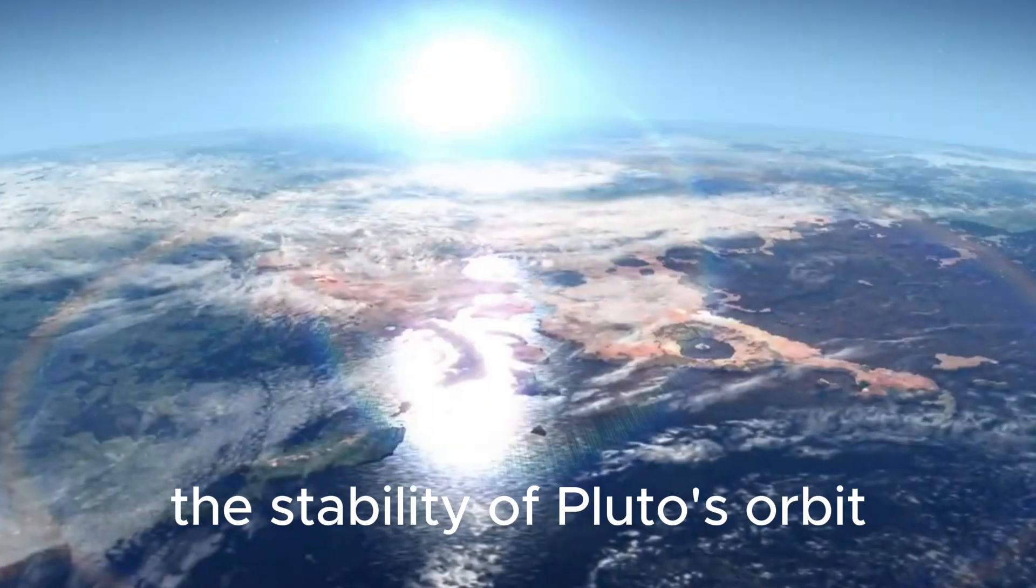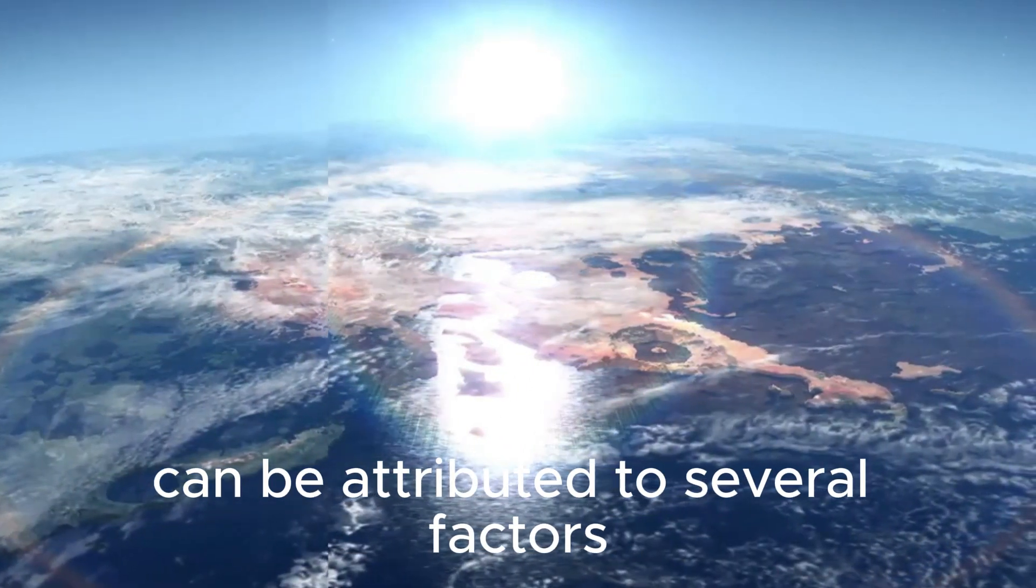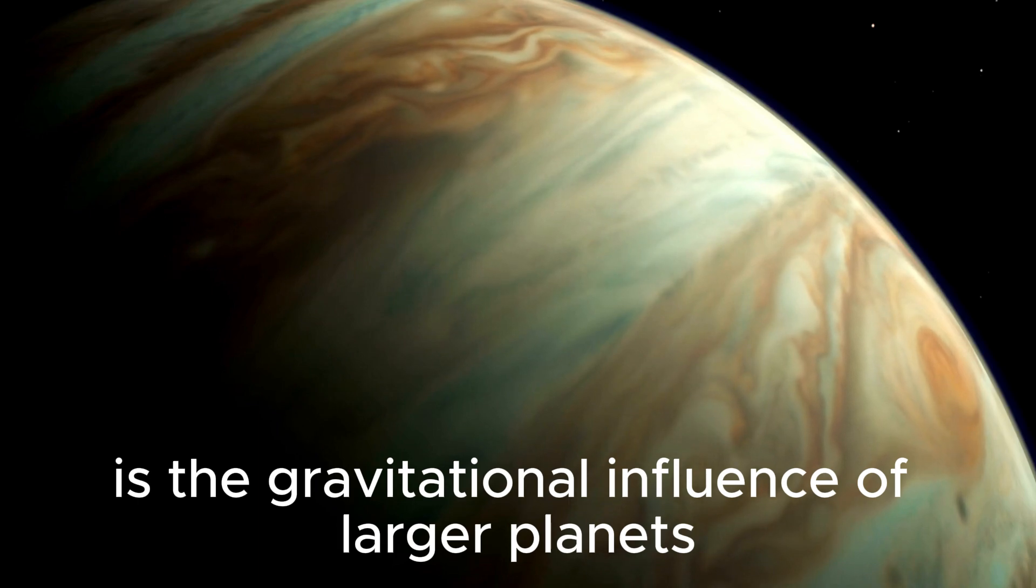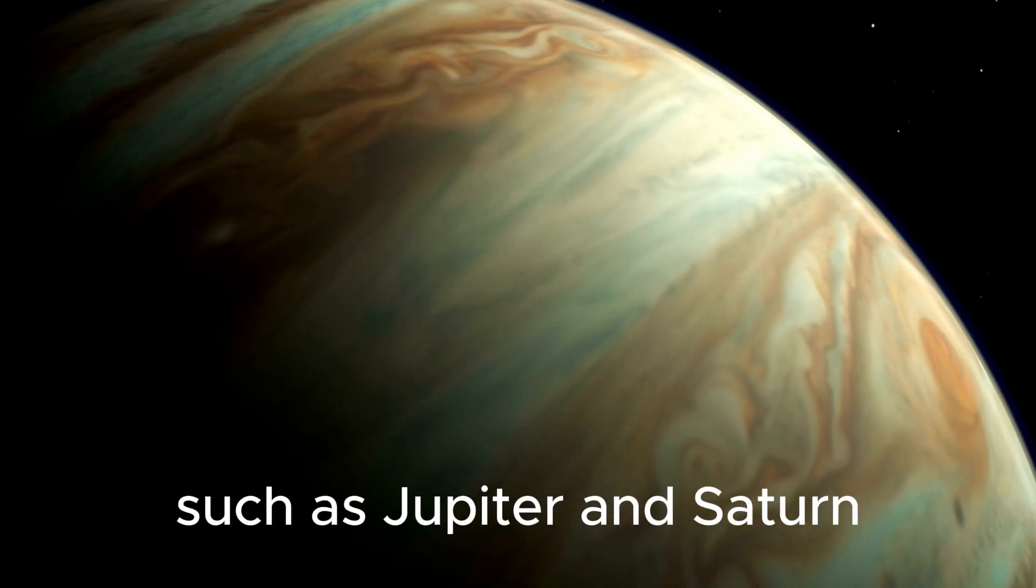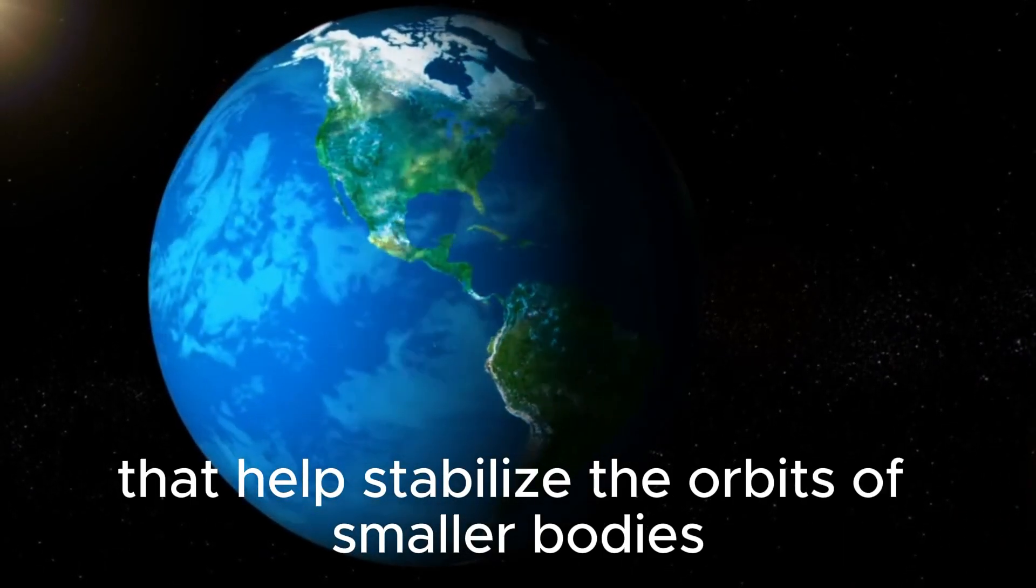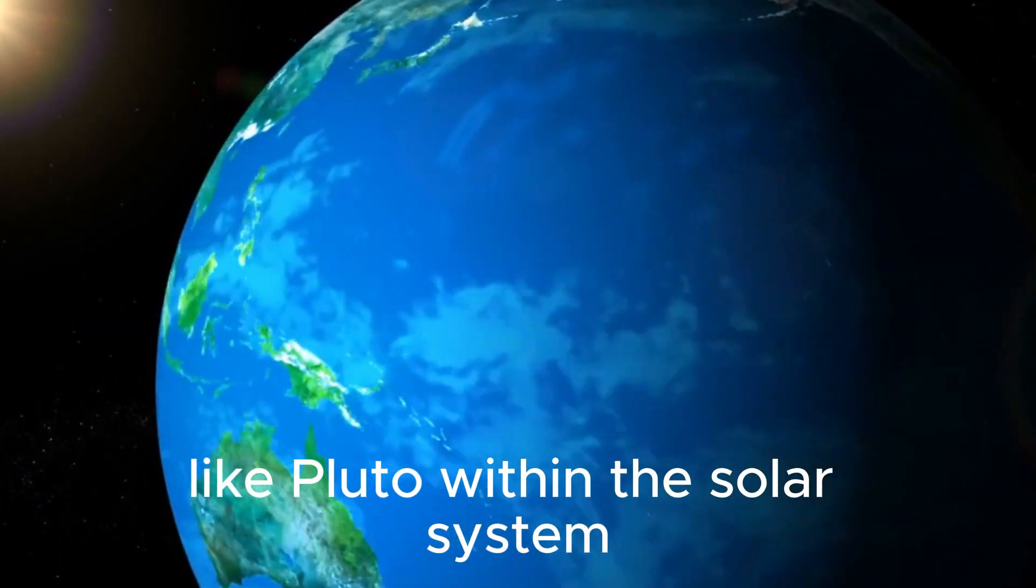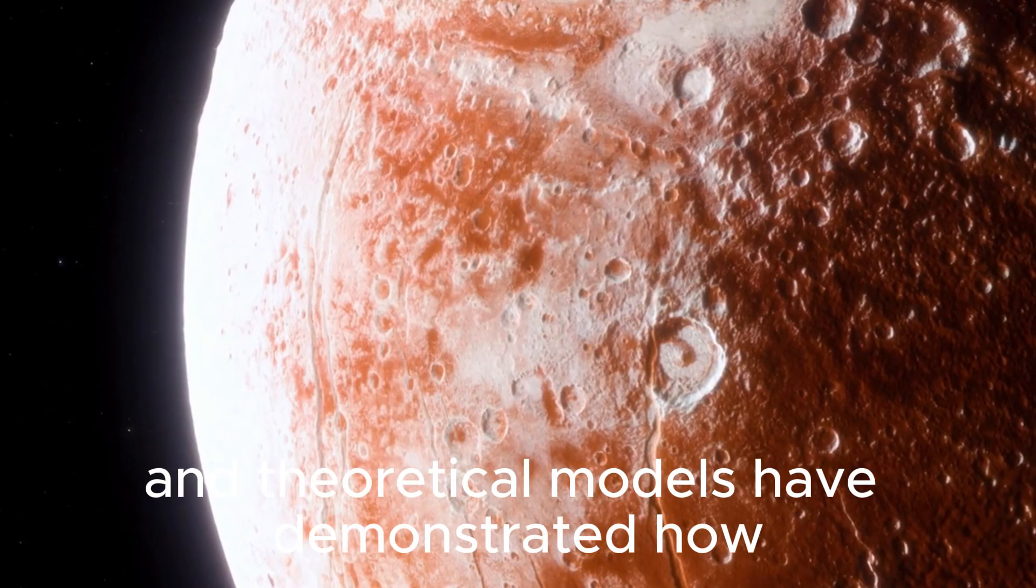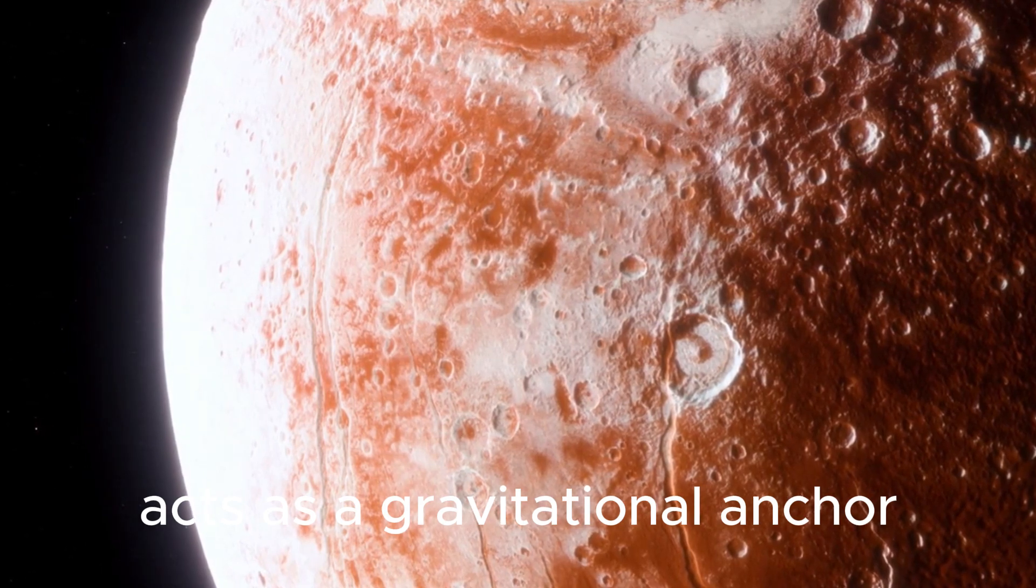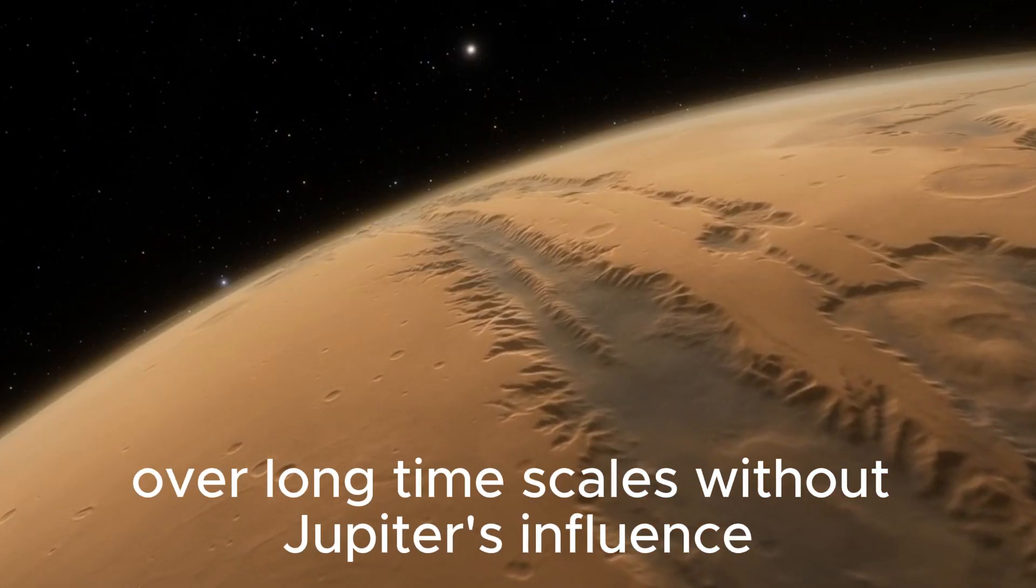The stability of Pluto's orbit amidst its eccentricity and interactions with Neptune can be attributed to several factors. One crucial aspect is the gravitational influence of larger planets such as Jupiter and Saturn. These gas giants exert significant gravitational forces that help stabilize the orbits of smaller bodies like Pluto within the solar system. Numerical simulations and theoretical models have demonstrated how Jupiter's gravitational pull acts as a gravitational anchor, maintaining the relative stability of Pluto's orbit over long timescales.